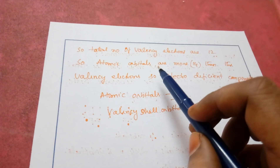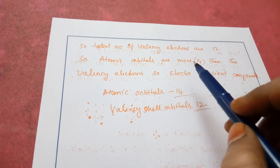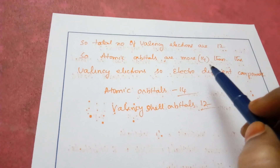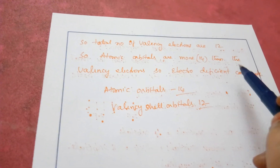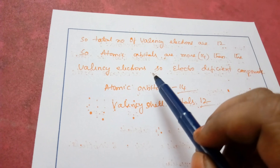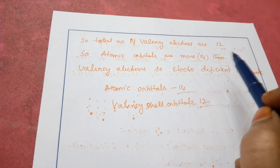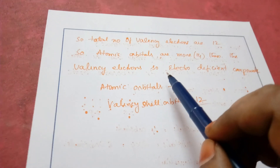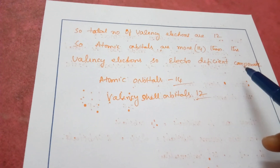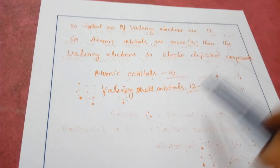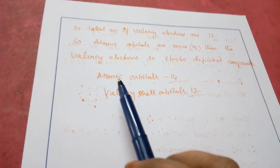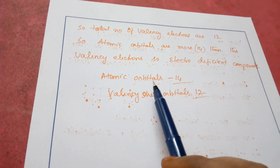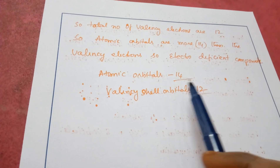The atomic orbitals in diborane total 14, which is more than the valence electrons, which total 12. Since the atomic orbitals are more than the valence electrons, diborane is called an electron deficient compound. The total atomic orbitals in diborane is 14.